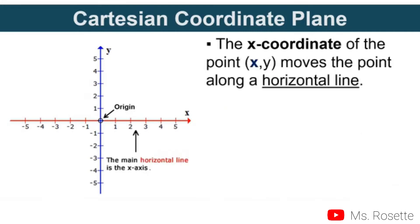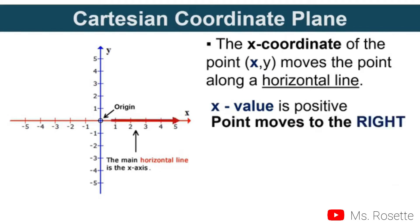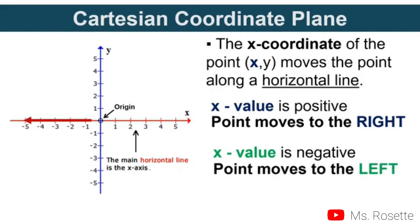The x-coordinate of the point (x,y) moves the point along a horizontal line. The red line that you can see, that is our x-axis. If the value of x is positive, the point moves to the right. If the value of x is negative, the point moves to the left.